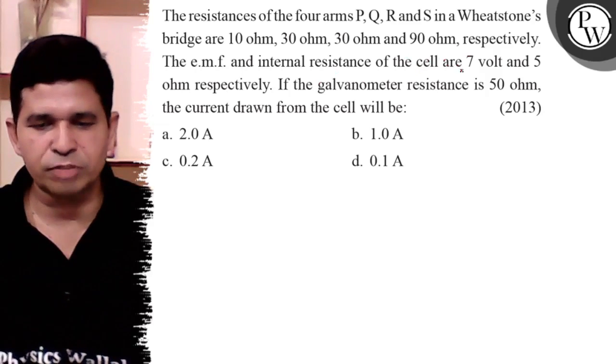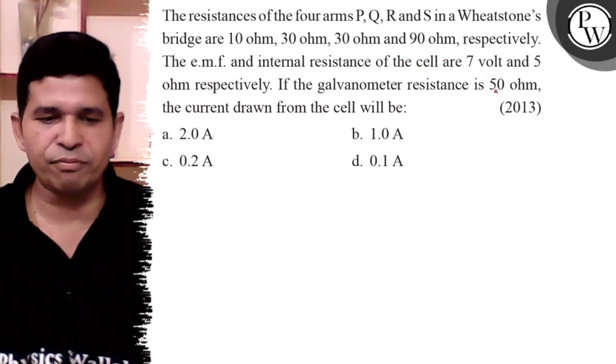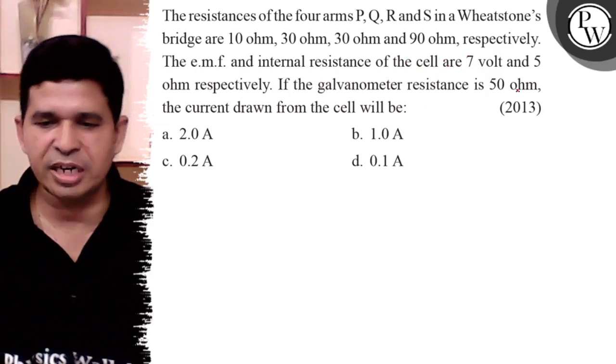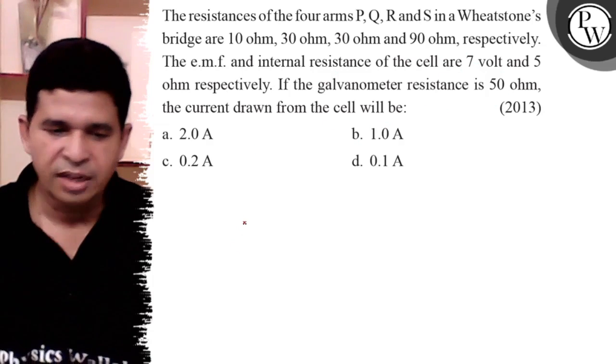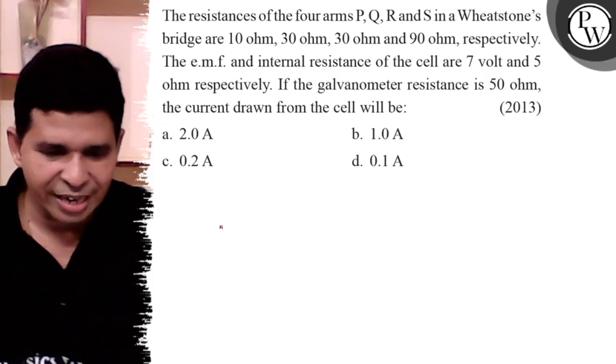The EMF and internal resistance of the cell are 7 volt and 5 ohm respectively. If the galvanometer resistance is 50 ohm, the current drawn from the cell will be what? First, mark the diagram of the circuit.